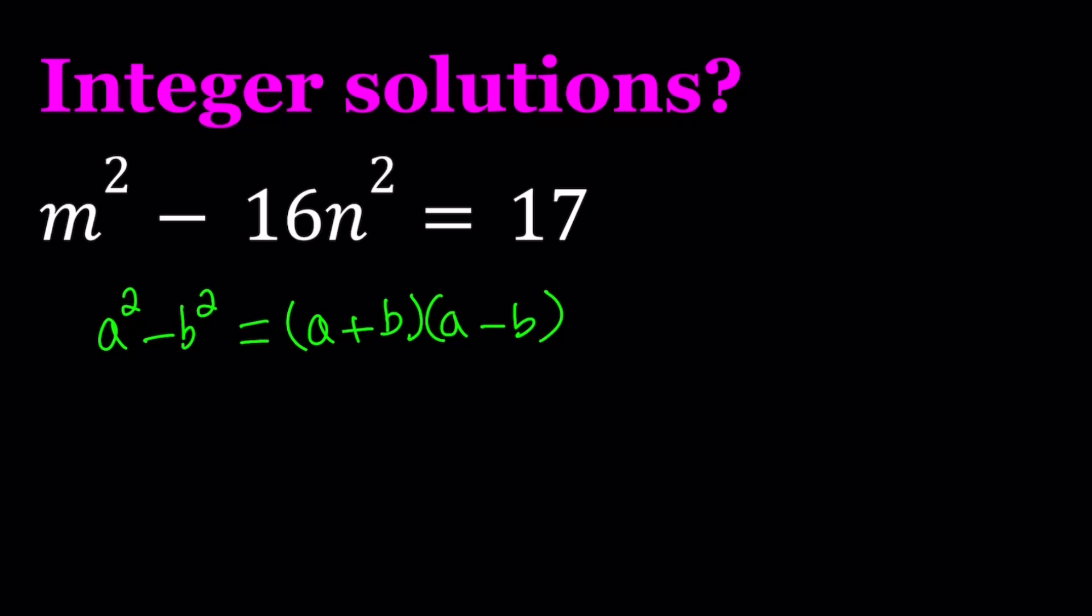We can go ahead and write this as follows: m plus 4n, because 4n times 4n is 16n squared, multiplied by m minus 4n equals 17.